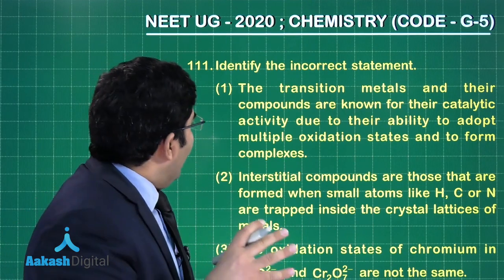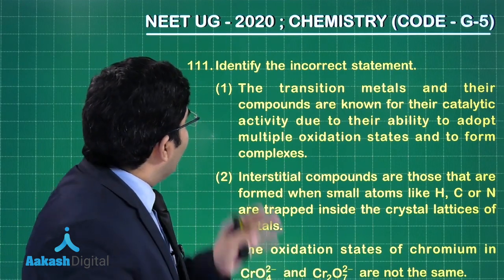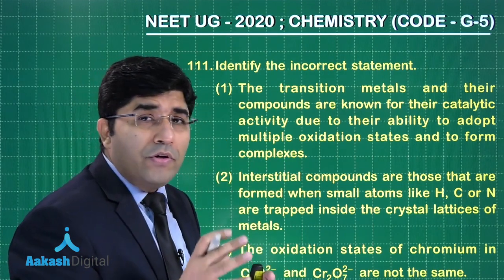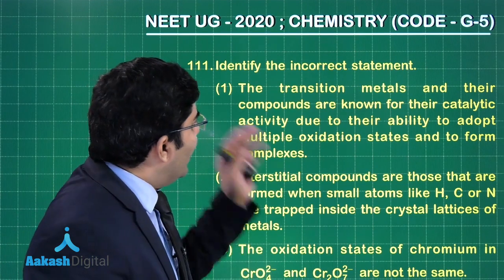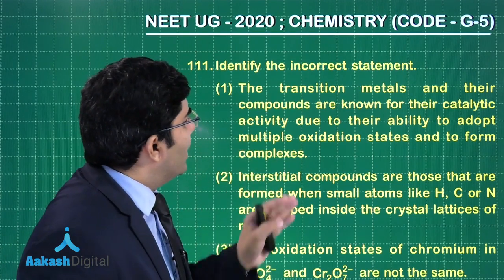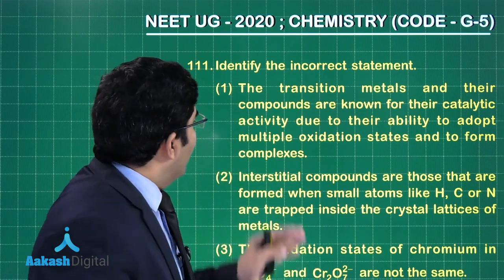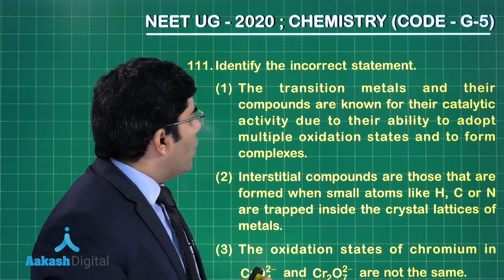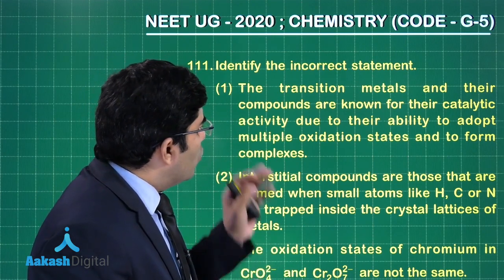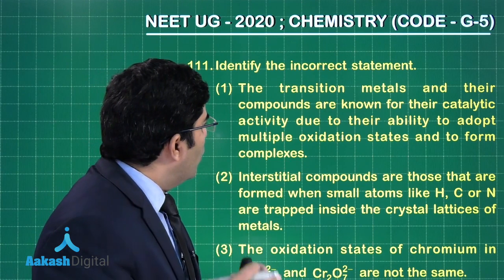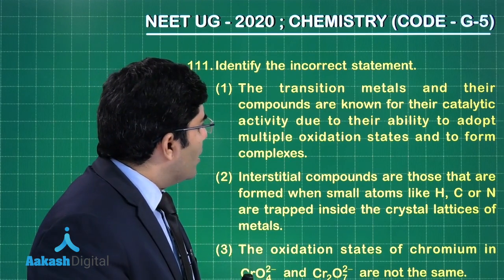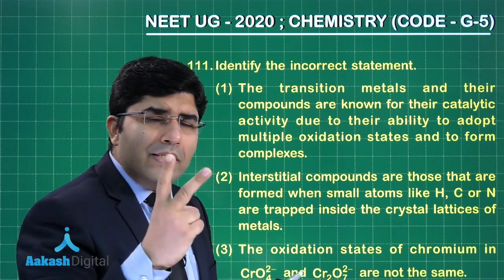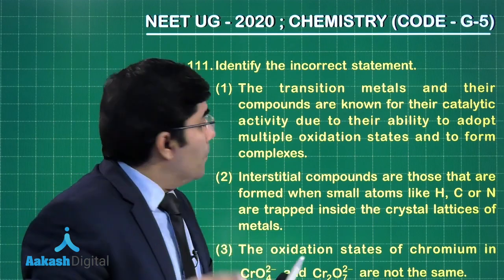This question is from the chapter d and f Block Elements. We have to identify the incorrect statement. The first statement says transition metals and their compounds are known for their catalytic activities due to their ability to adopt multiple oxidation states and to form complexes.